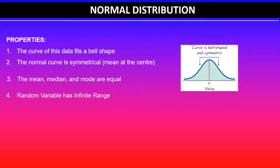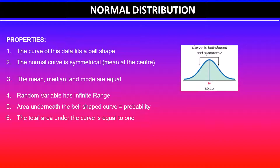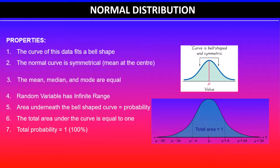The random variable can take infinite values — you can see that it is symmetrical from the mean, and the values continue on either side, so it can take infinite values on either side of the mean. The fifth property is that the area underneath the bell-shaped curve denotes the probability, and the total area under the curve equals one, because probability lies between zero and one. The total area will be one, as shown in this graph.